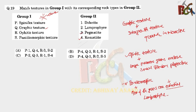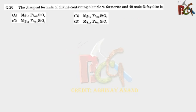Graphic texture is formed between the quartz and microcline, so it will be pegmatite. And obviously ophitic texture is in dolerite and panidiomorphic texture is lamprophyre. So S2 and P4. The only option we have is B. The next question is the chemical formula of olivine containing 60 mol percent forsterite and 40 mol percent fayalite.